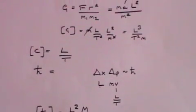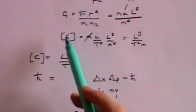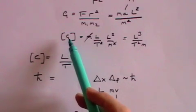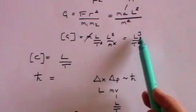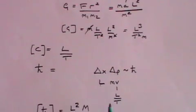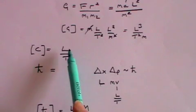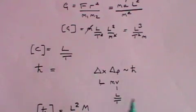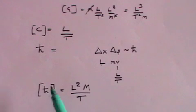So let's just remind ourselves where we got to. The gravitational constant G has dimensions l-cubed divided by t-squared m. The speed of light c has dimensions l divided by t. And Planck's constant has dimensions l-squared m divided by t.